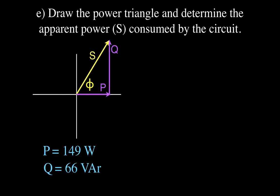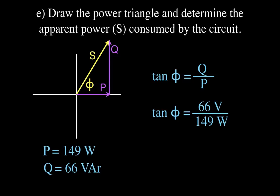We can also verify the phase angle a third way using the triangle. The tangent of the angle equals the opposite over the adjacent, so tan(φ) equals Q divided by P: 66 divided by 149. Taking the inverse tangent gives 24 degrees, which matches our earlier calculation of 24.5 degrees — confirming we have the correct values.